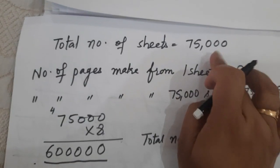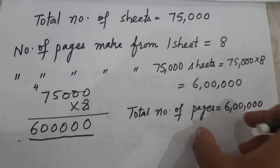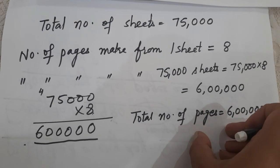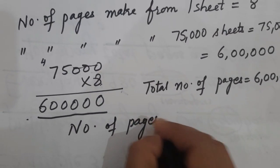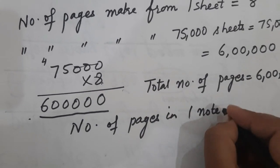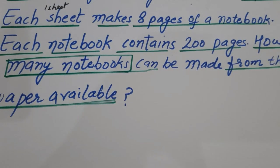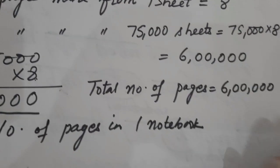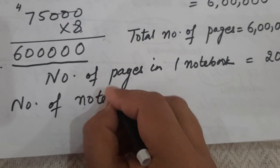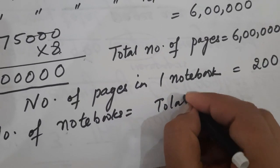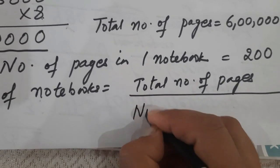With the help of 75,000 sheets we can make 6 lakh pages. Next, we have to find out how many notebooks can be made. The number of pages in one notebook is equal to 200. So the number of notebooks equals the total number of pages divided by the number of pages in one notebook.